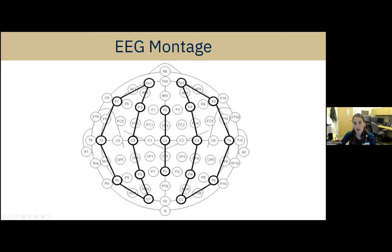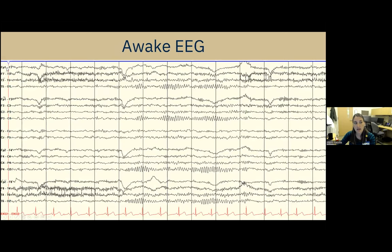The top of the screen is the left side of the brain, the bottom is the right side. The letters indicate brain regions: F for frontal, O for occipital or back. Each black vertical line is about a second, so we're looking at roughly 13 seconds of EEG on one page. This is an example of a normal awake background - what the brain waves look like when someone is just lying there awake and relaxed.